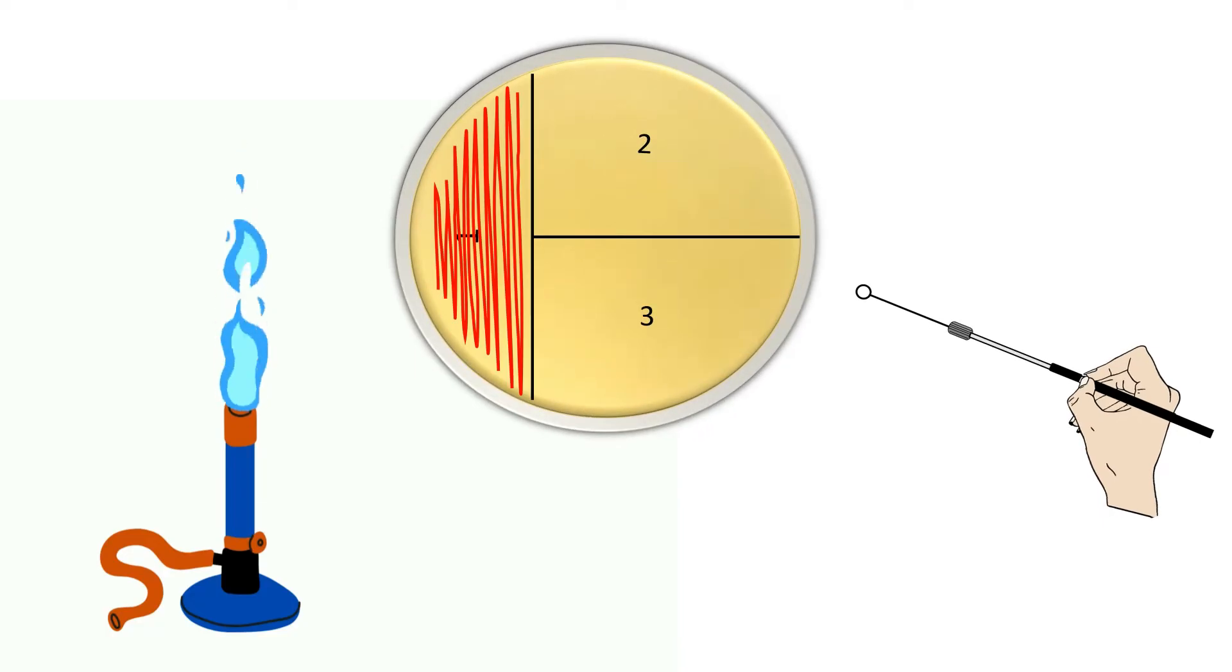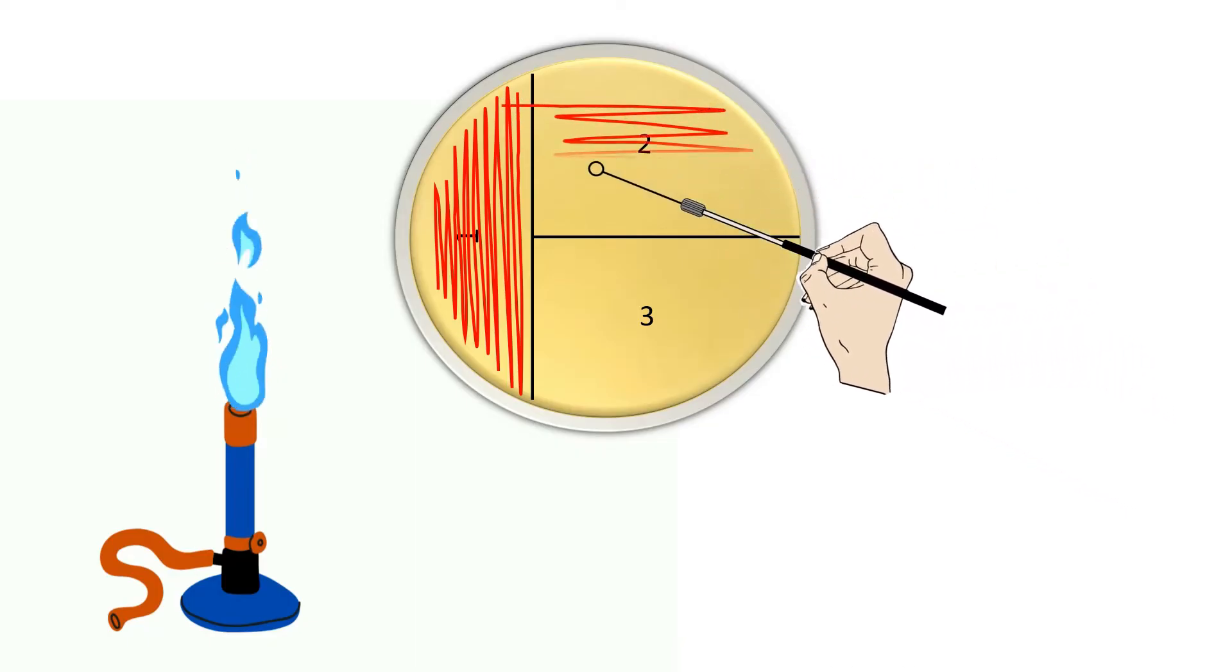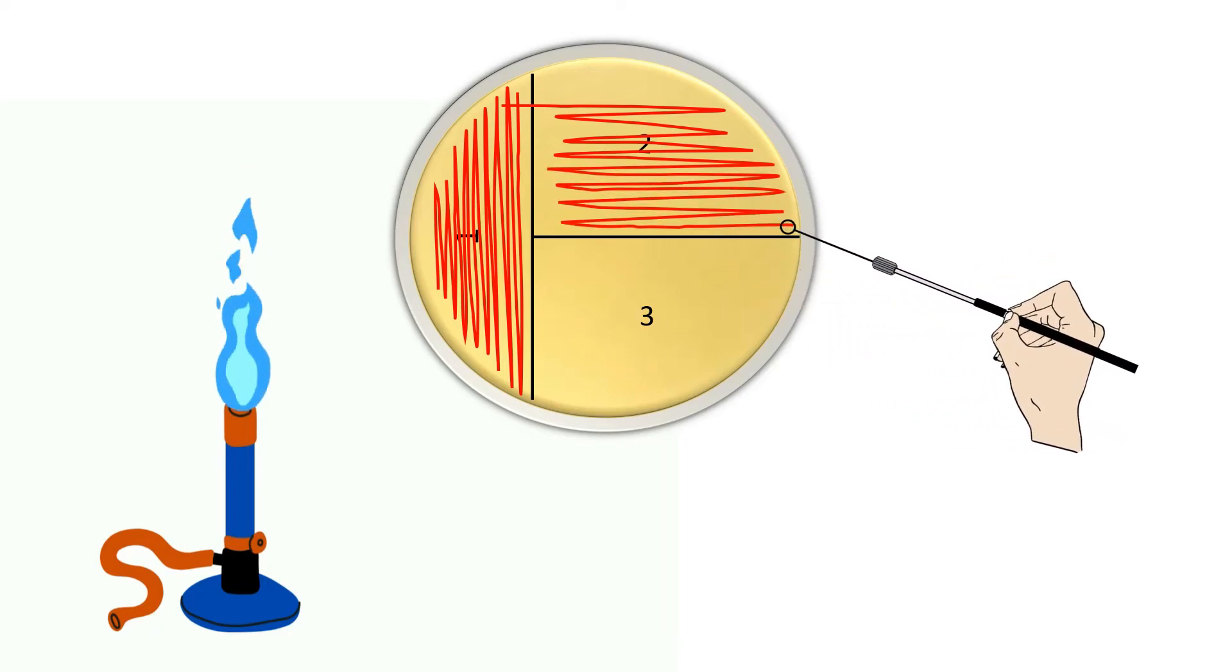Now touch a few lines in the corner of area 1 and drag the wire loop into area 2 and streak back and forth in a zigzag motion to spread culture.